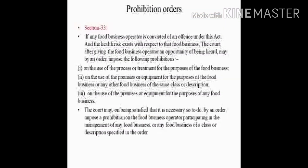Next are prohibition orders. Section 33 explains prohibition orders: if a food business operator is convicted of an offense and a health risk exists with respect to that food business, the court will hear the food business operator and impose the following prohibitions under section 34 — on the use of a process or treatment for the purpose of food business; on the use of premises or equipment for the purpose of food business or any other food business of the same class or description; on the use of premises or equipment for the purpose of any food business.